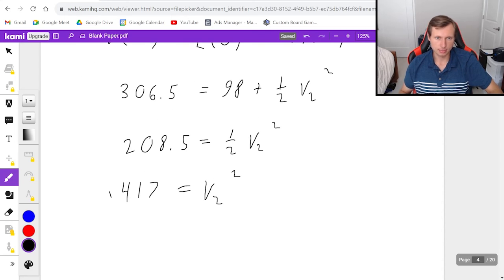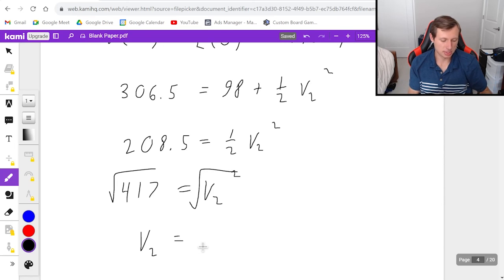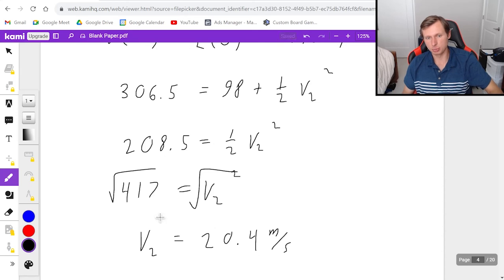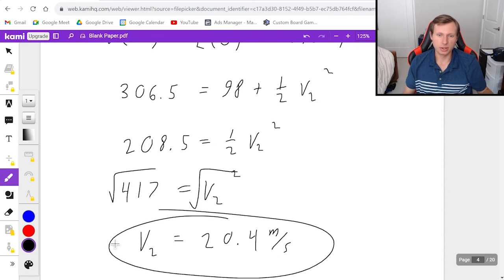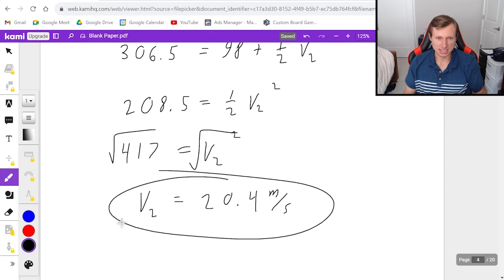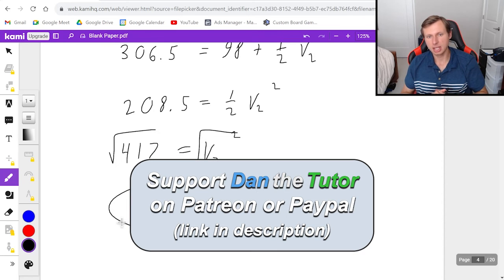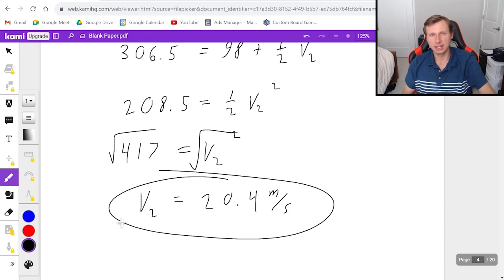Finally, we take the square root of both sides, and it looks like my velocity at the final position is going to be 20.4, and that's meters per second. And there we go. There's some very fun practice problems for us. So hopefully that all made sense. If not, please comment below. Thank you all for watching, and I will see you in the next video. Take care, and bye-bye.